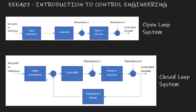Your input transducer converts your reference into a signal, and your output transducer converts the output signal into a similar signal as what comes from the input transducer, so that the summing junction can take this plus or minus that, as the case may be. That result then goes into the controller.